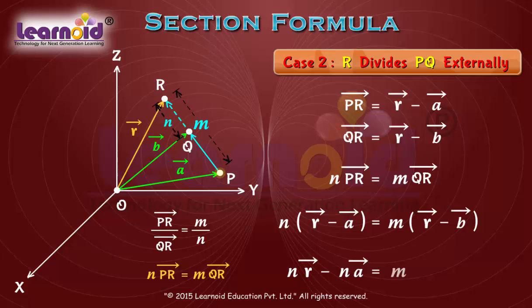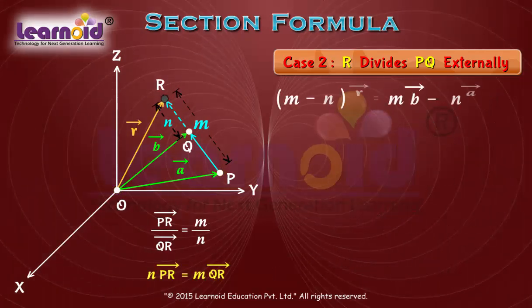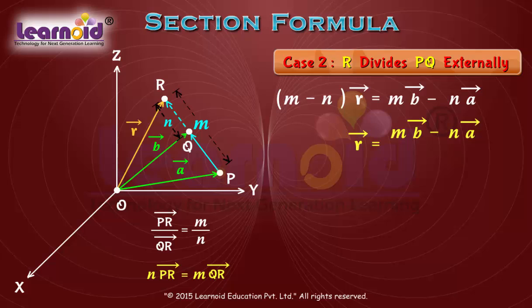We will get n times vector r minus a is equal to m times vector r minus b.